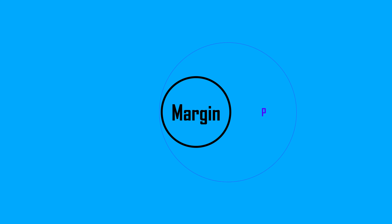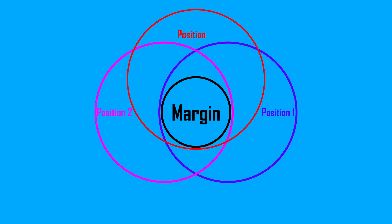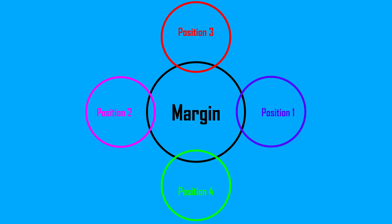Binance supports cross margin and isolated margin trading modes. In cross margin mode, your funds will be shared between all the trading pairs. However, in isolated margin mode, your funds are limited to an individual trading pair.